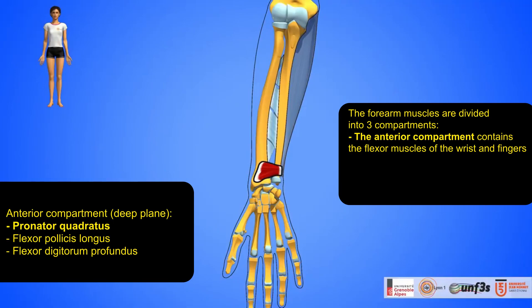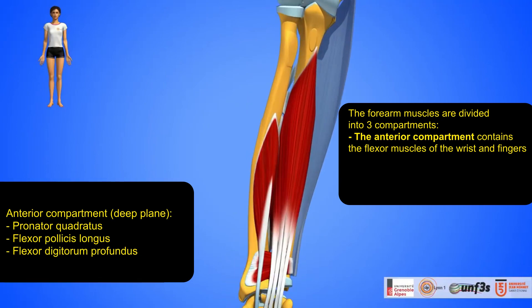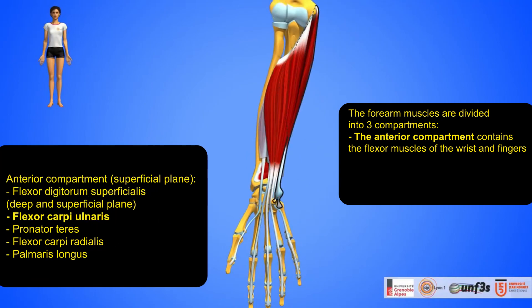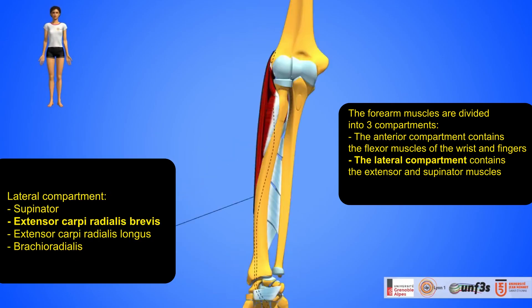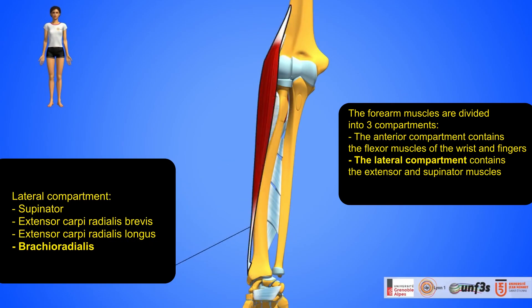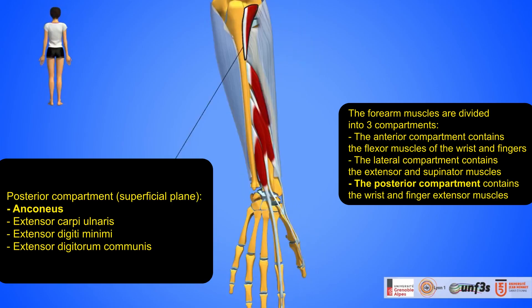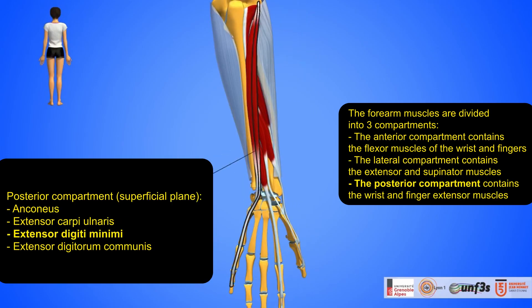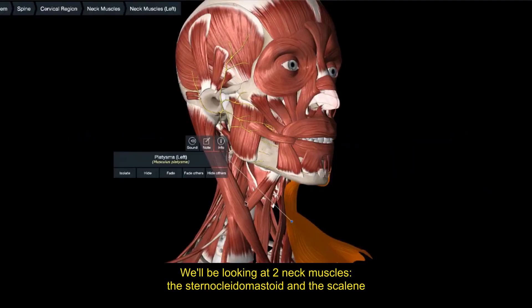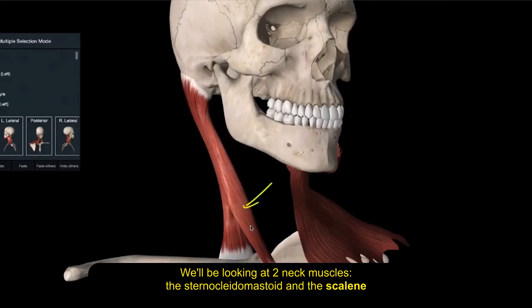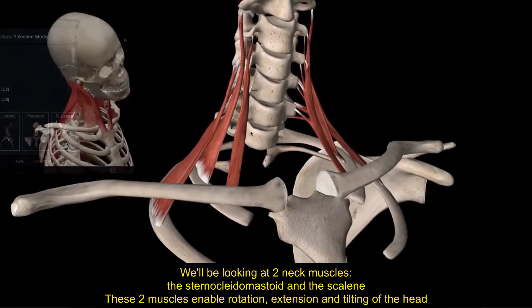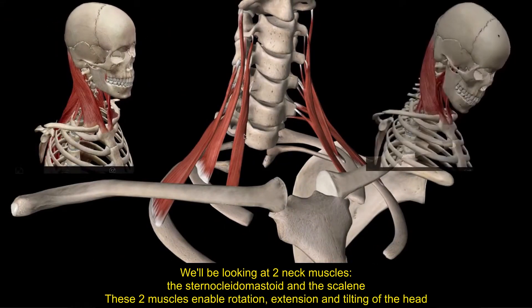Forearm muscles. The forearm muscles are divided into three compartments: the anterior compartment contains the flexor muscles of the wrist and fingers, the lateral compartment contains the extensor and supinator muscles, and the posterior compartment contains the wrist and finger extensor muscles. Neck muscles. We'll look at two neck muscles — the sternocleidomastoid and the scalene — which enable rotation, extension, and tilting of the head.